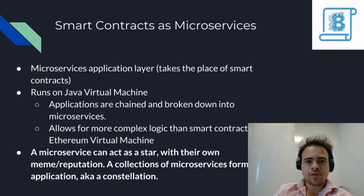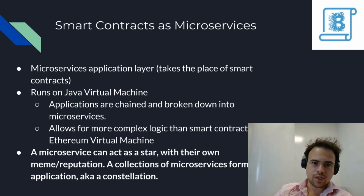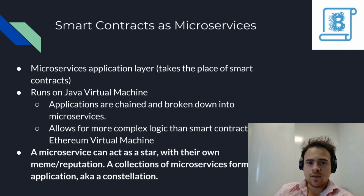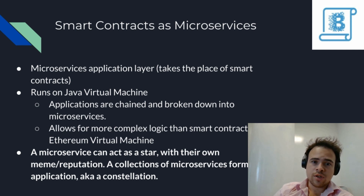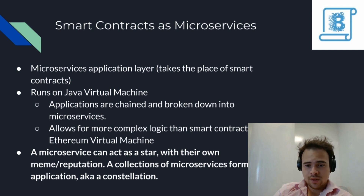Just like a constellation only exists through the invisible linkage between the stars that make it up, Constellation Labs' hypothesis is that a distributed application is most scalable when it is broken down into simpler microservices that can be fed into DAGs and computed with concurrent programming.